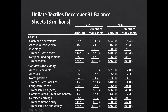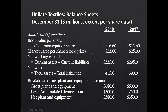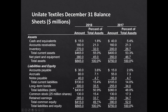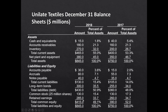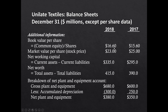Looking at additional information from the balance sheet, Unilate has 25 million shares of common stock outstanding. Book value per share is common equity divided by shares: $16.60 in 2018 versus $15.60 in 2017. However, market value per share — the stock price — is $23 in 2018 and was $25 in 2017. So market and book value per share diverge, which starts raising interesting analytical questions.